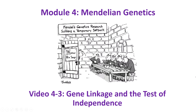This is Module 4, Mendelian Genetics. In this video, Video 4-3, Gene Linkage and the Test of Independence, we'll be looking at this idea of linked genes again. We're coming back to the dihybrid cross and then we're going to test to see if the probability that genes are linked or not.